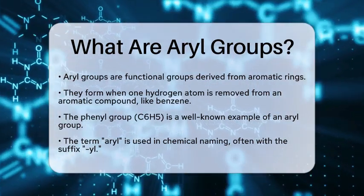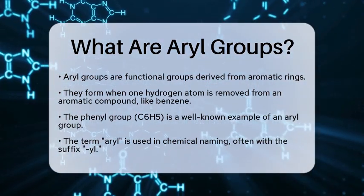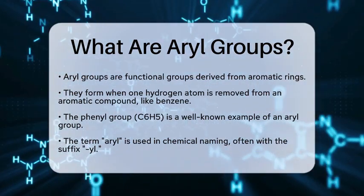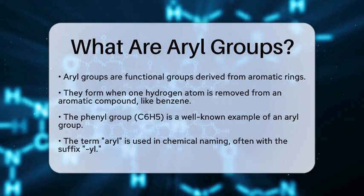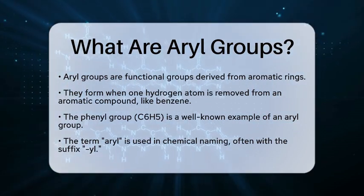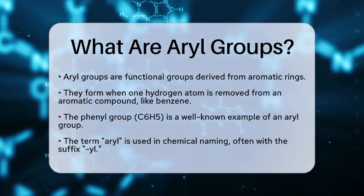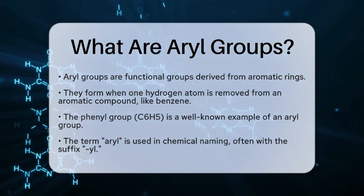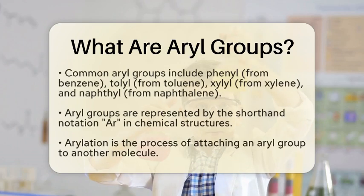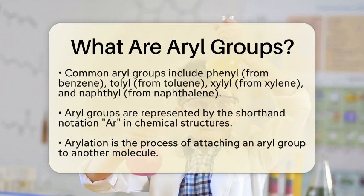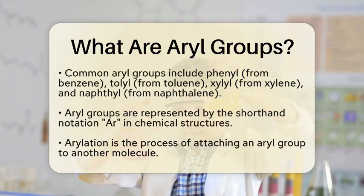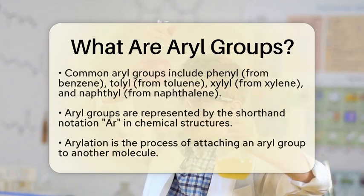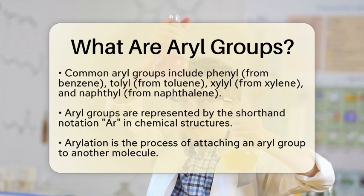Aryl groups are often named using the suffix -yl. For example, when we talk about phenyl, tolyl, or naphthyl, we are referring to specific aryl groups derived from benzene, toluene, and naphthalene, respectively.